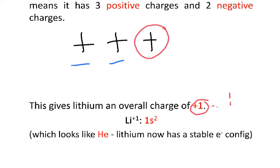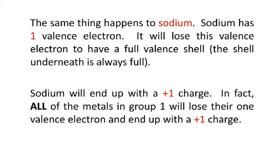This gives lithium an overall charge of plus one. Lithium's new electron configuration is 1s2. That looks like helium, doesn't it? Because helium has an electron configuration of 1s2. So it's happy now — its electron configuration is very stable at this point in time.